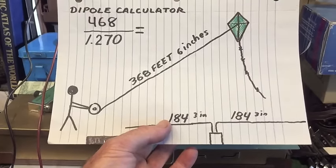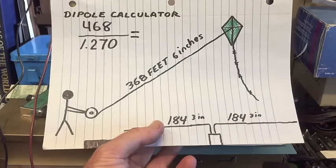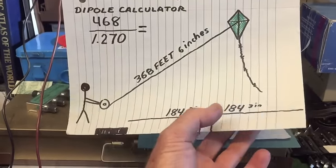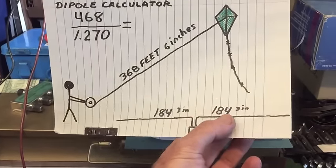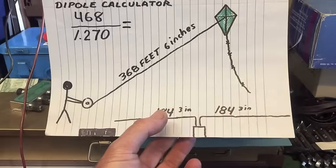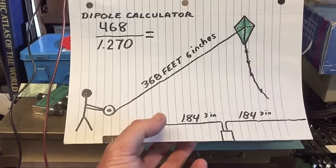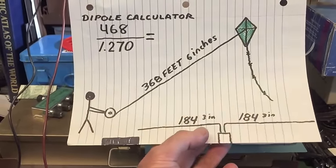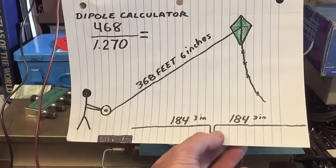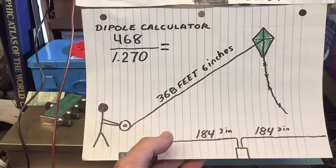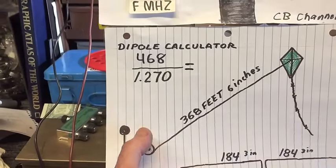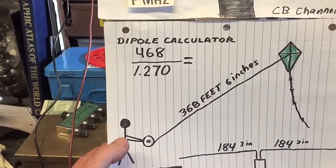To build a half wavelength dipole, I figured each element would have to be 184 feet and 3 inches long. Since I was going to erect this antenna with a kite, I realized building a dipole antenna wouldn't be too practical because I'd have to have a connector in the middle. So I decided to measure out a half wavelength which would be 368 feet and 6 inches.